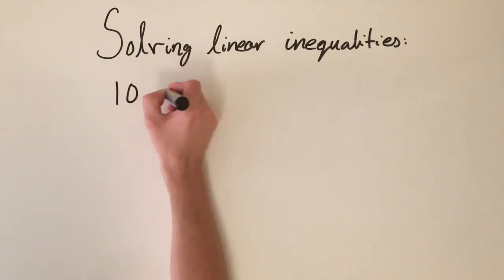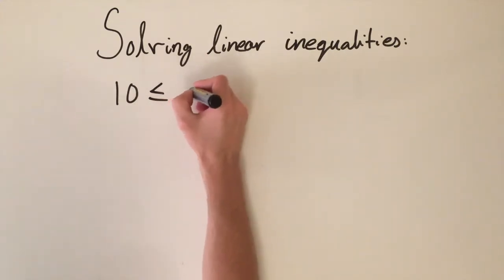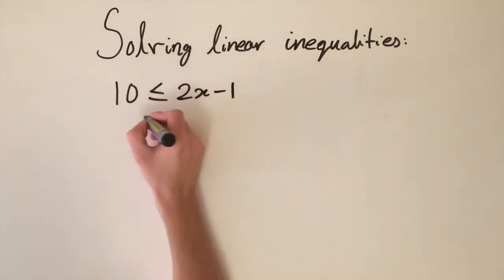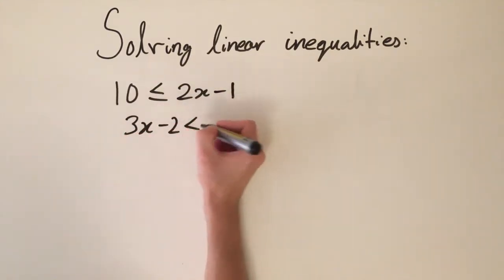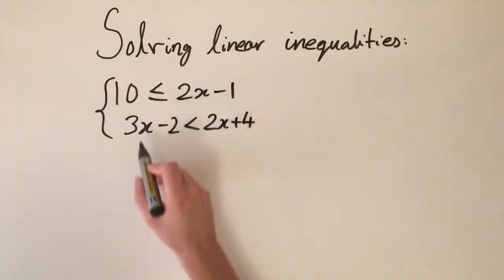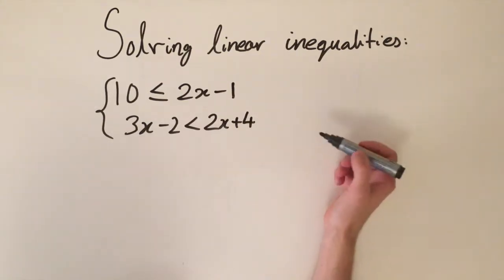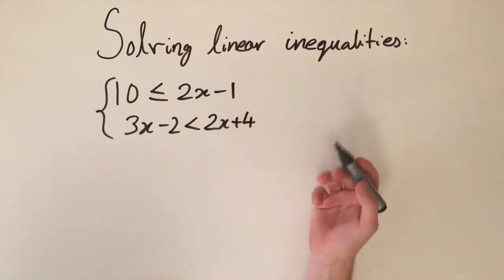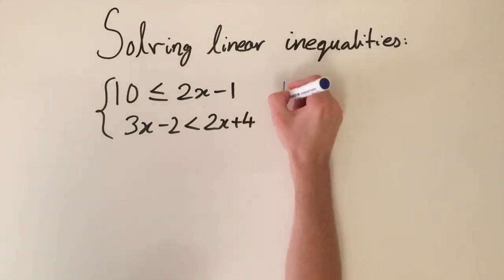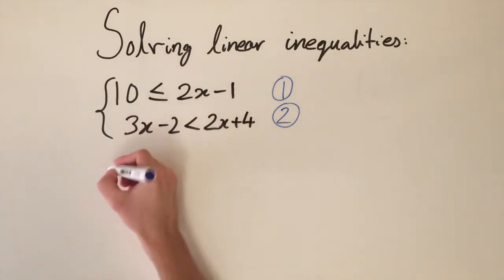Now we want to look at a harder example: solving two linear inequalities at the same time. We have 10 less than or equal to 2x minus 1, and 3x minus 2 is less than 2x plus 4. We want to find solutions satisfying both inequalities simultaneously. We solve each one separately and then consider what values satisfy both conditions. Let's label these as inequality 1 and inequality 2.